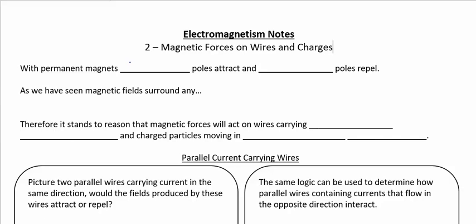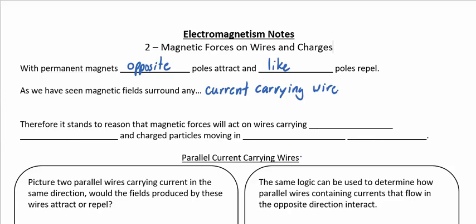We know that permanent magnets — that opposite poles will attract and like poles will repel. We've also seen that magnetic fields will surround any current-carrying wire. So it stands to reason that if magnets can push and pull on each other, then maybe current flowing through a wire can also generate these push and pull forces. Magnetic forces will act on wires carrying moving charges and similarly on any charged particles that are moving in a magnetic field.